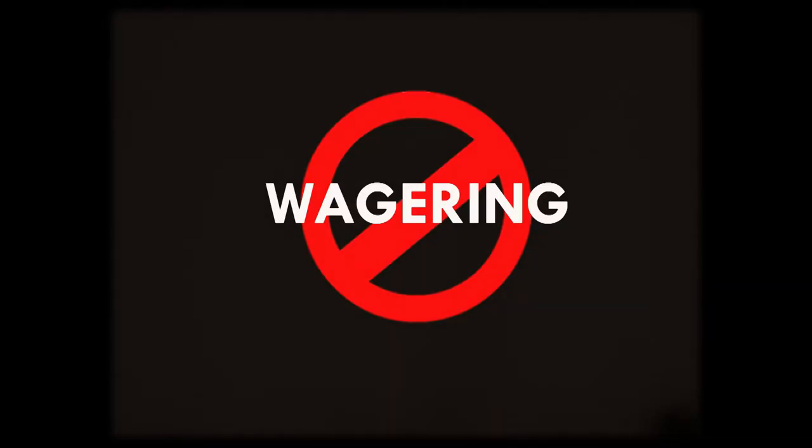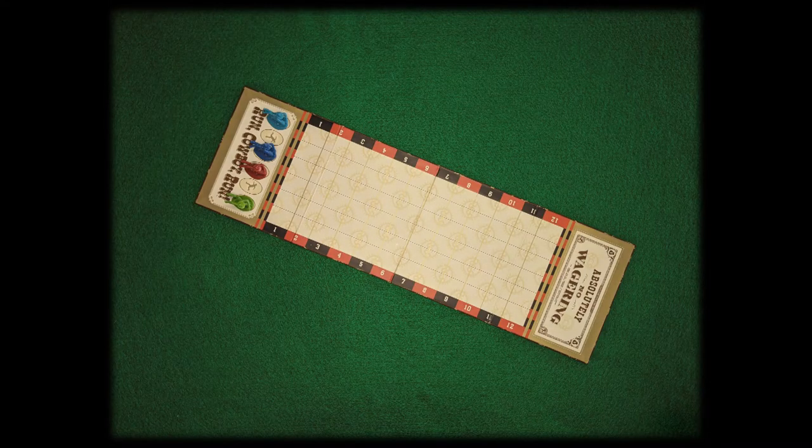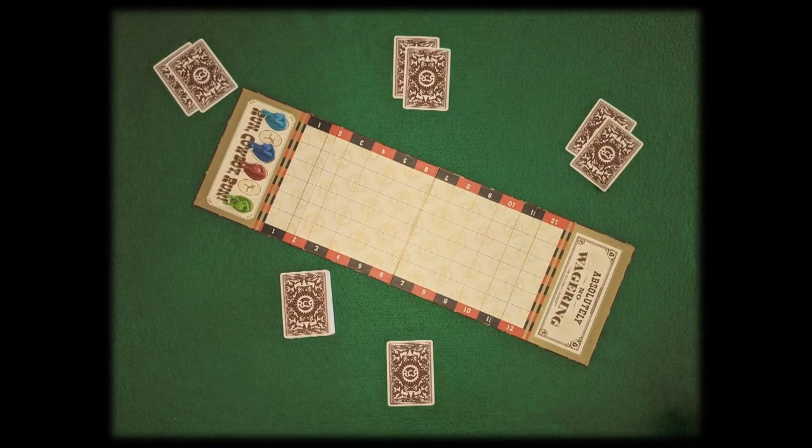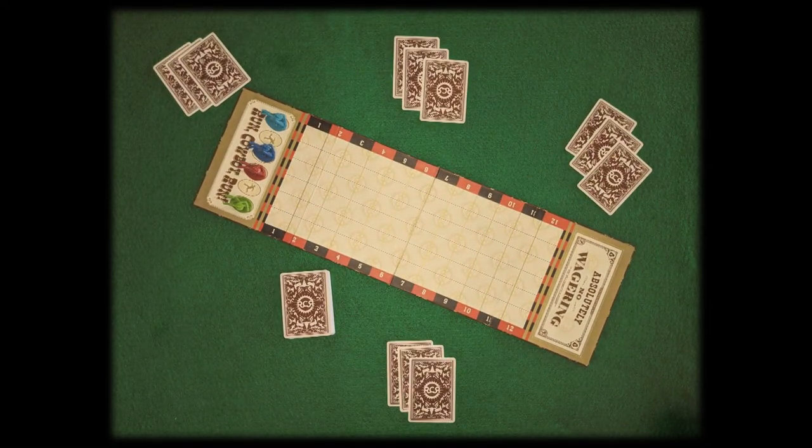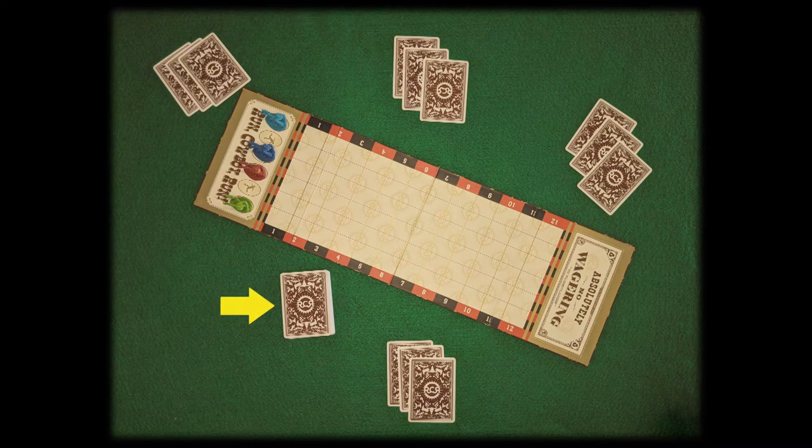No wagering! Next, the dealer shuffles the cards, and deals three cards face down to each player, and places the remaining deck face down. This is the draw pile.